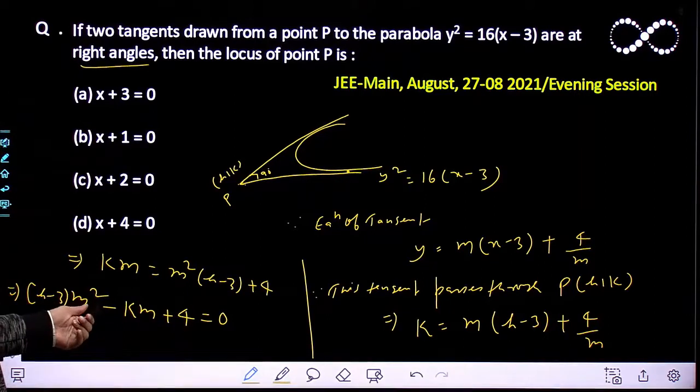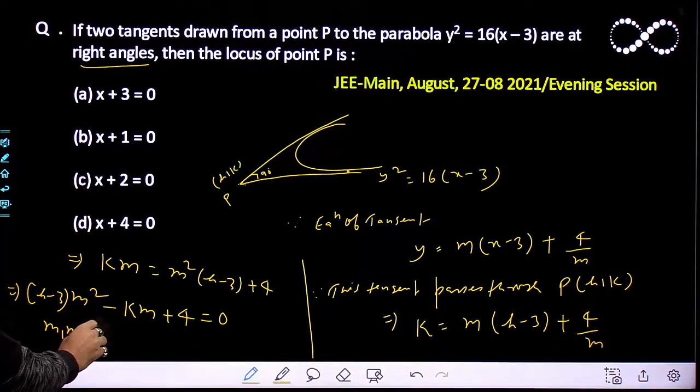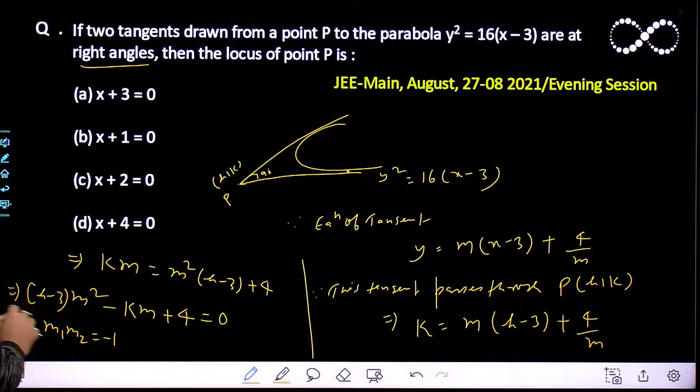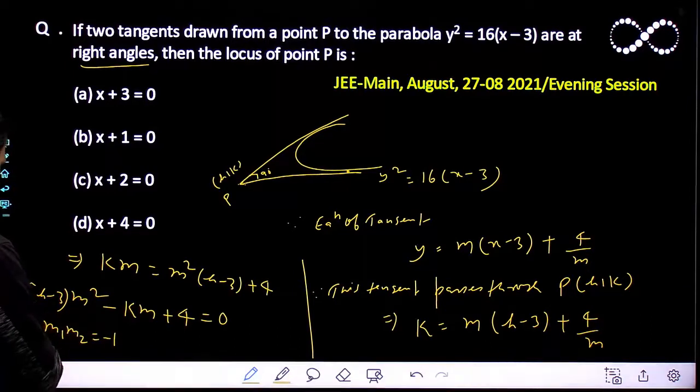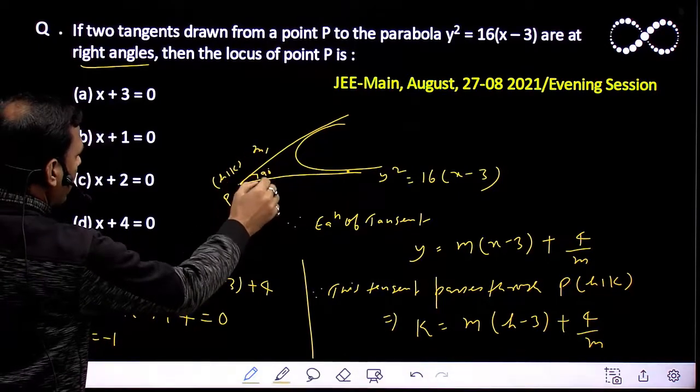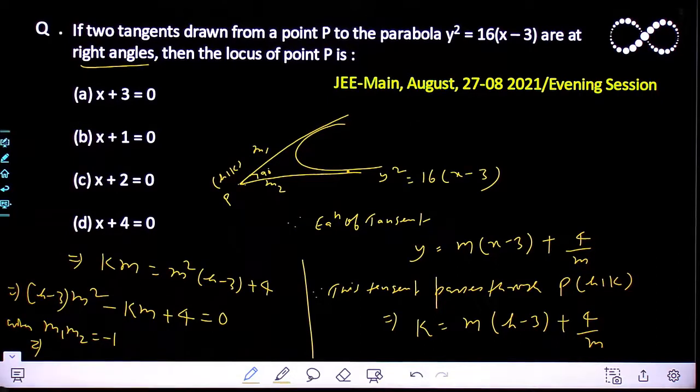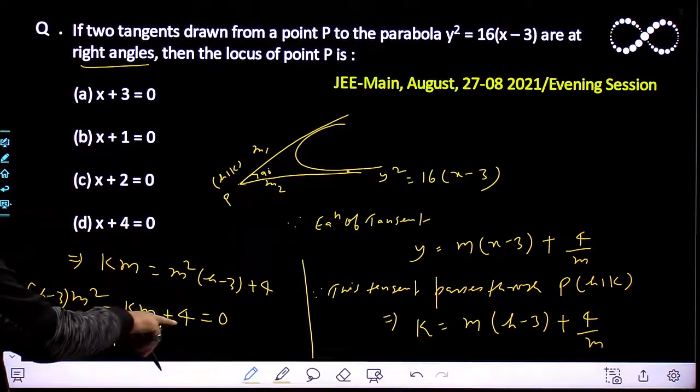Now from here, there are two values of m: m₁ and m₂, because m² is quadratic. We're given that m₁ · m₂ = -1. This is given for m. m₁ · m₂ = -1 because at right angles, one slope is m₁, the other slope is m₂, so their product is -1. At 90 degrees, m₁ · m₂...